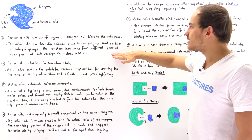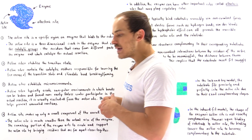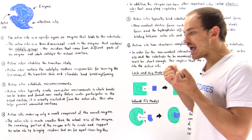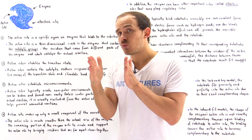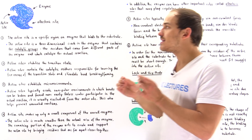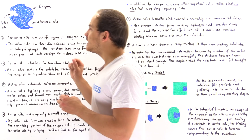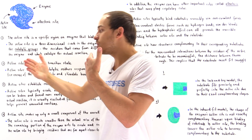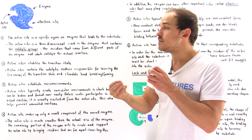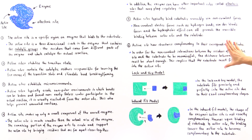This leads us into property six. For non-covalent interactions to be strong enough and meaningful, the distance between the molecules and atoms forming the bonds must be short enough. In order for the substrate to get close enough to the active site to form those meaningful non-covalent bonds, the shape of the substrate has to be complementary to the shape of the active site of the enzyme.